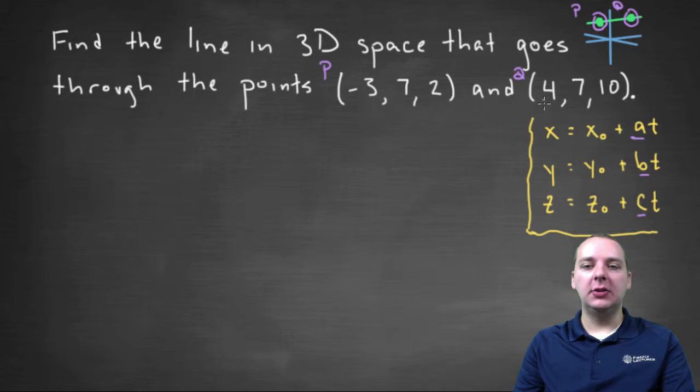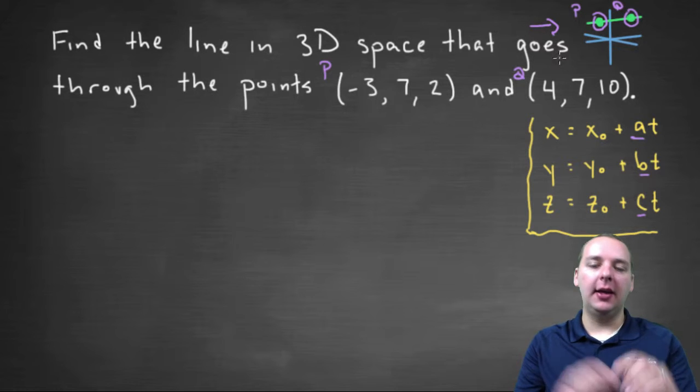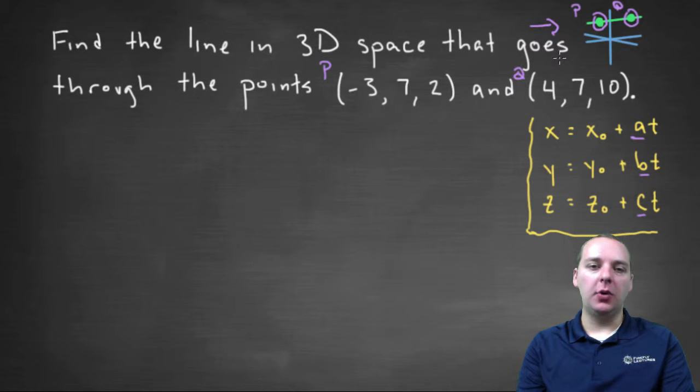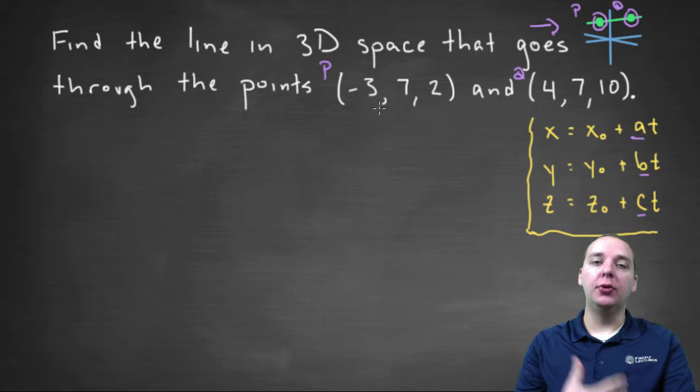So do you have any thoughts as to how you could find the direction vector for this line? Because I can see the green line here, but how do you find a vector that points in the direction of the line? Well let me tell you. We're going to find the vector, we're going to create or build a vector that goes from P to Q, or Q to P, it doesn't really matter.